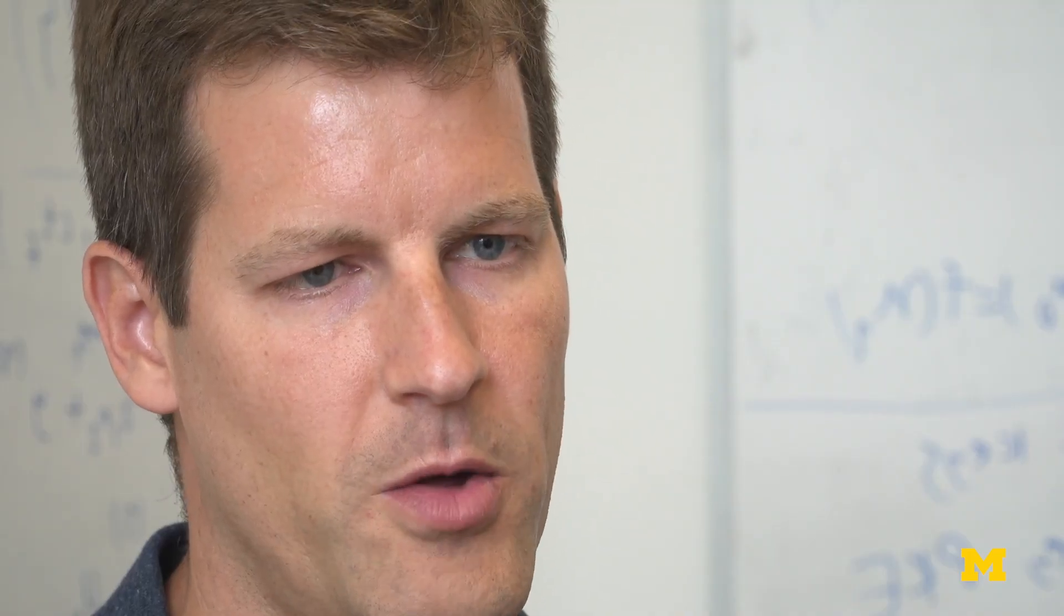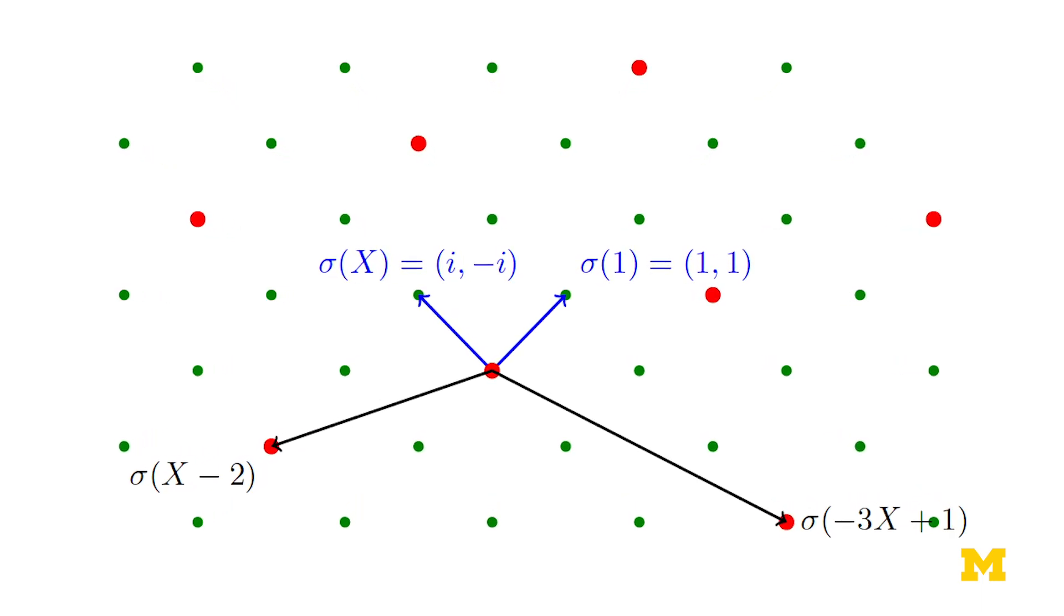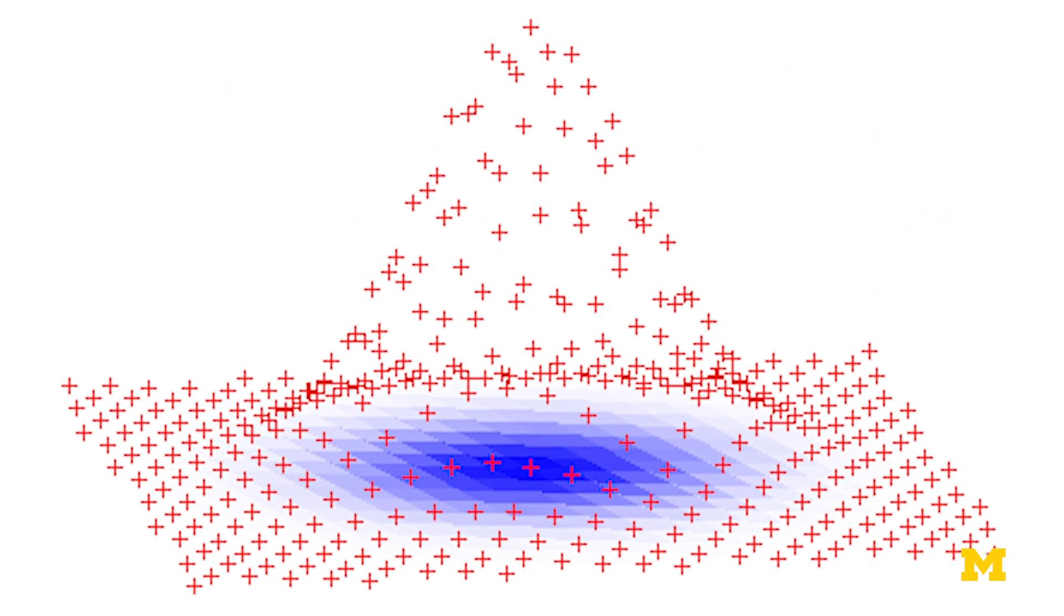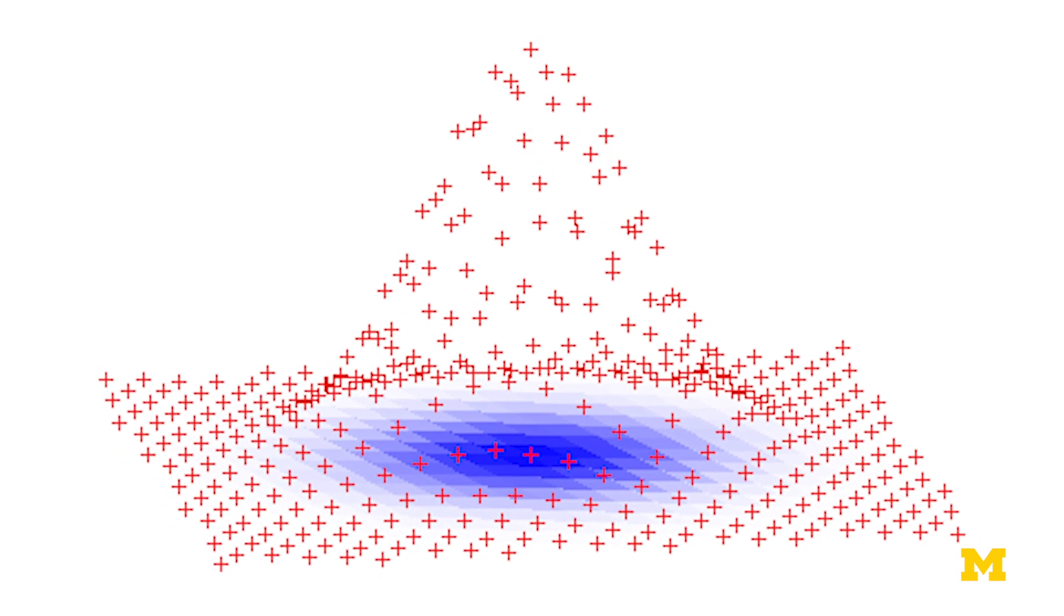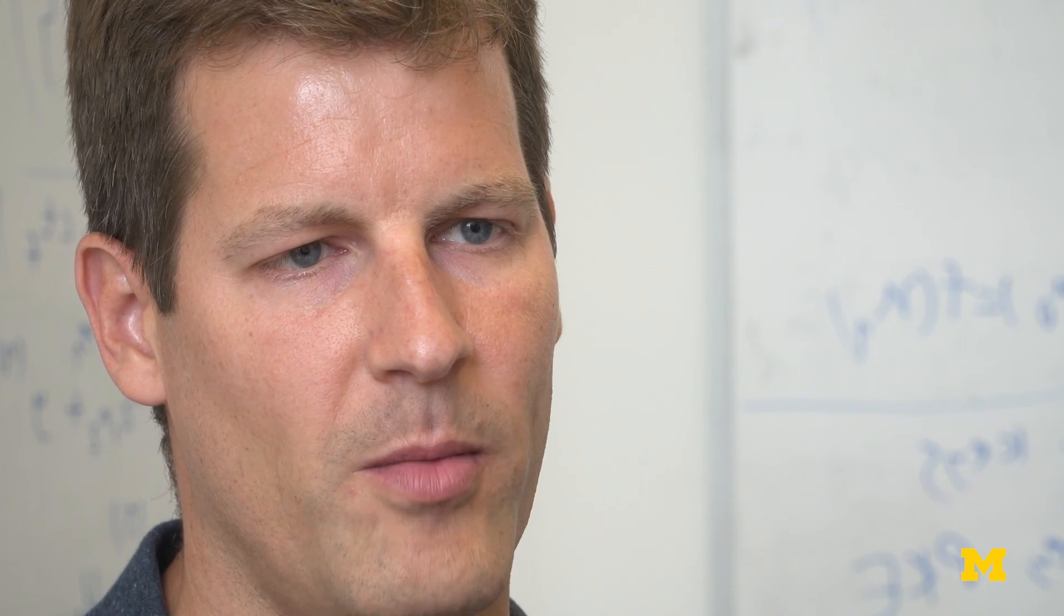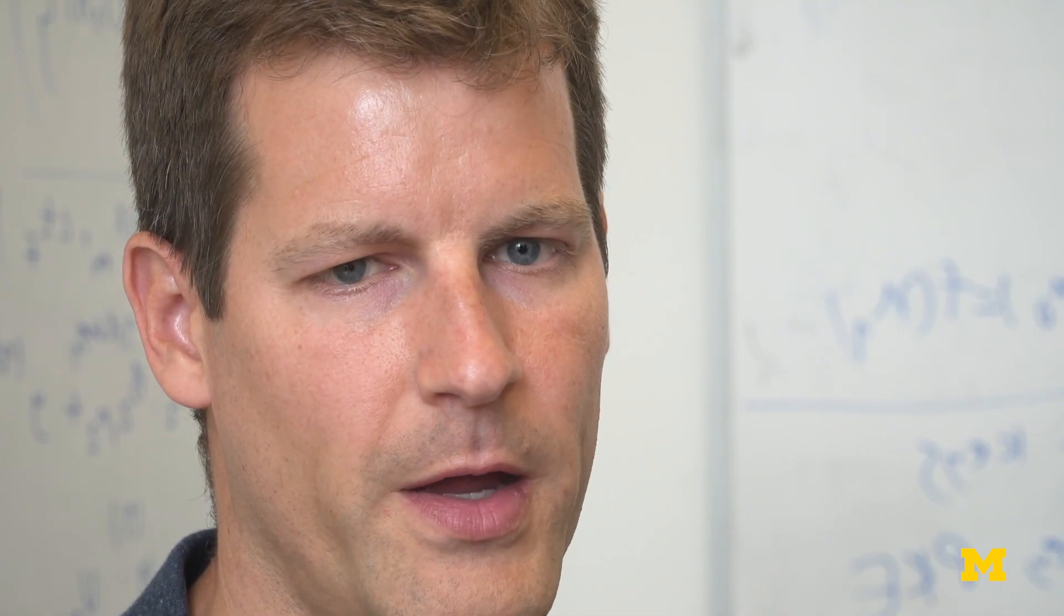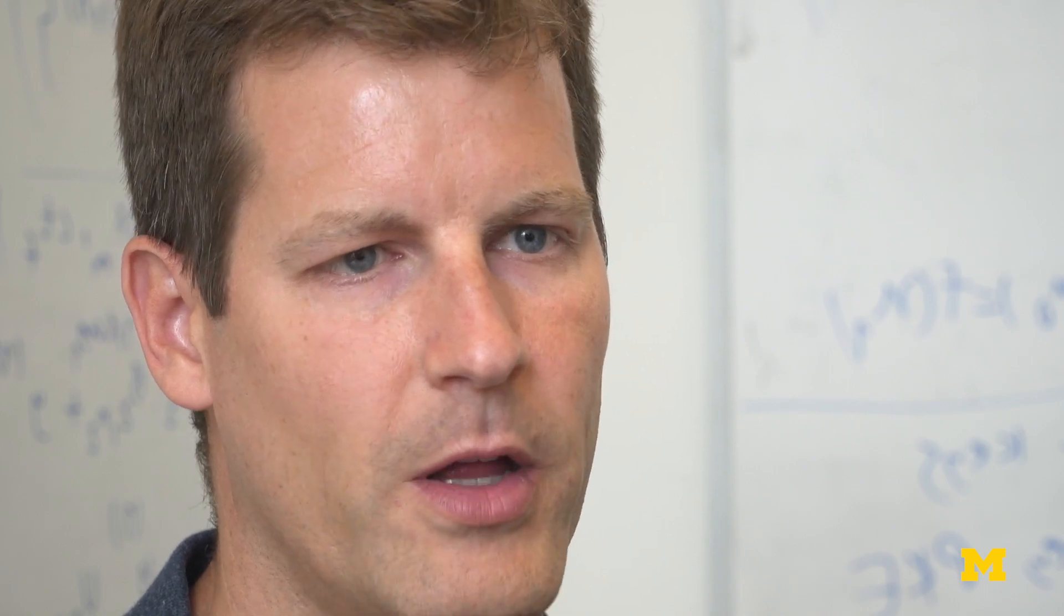A lattice is this geometric grid of points that goes up to infinity in all directions and we use them in very high dimensions, hundreds or even a thousand or more dimensions. And the core difficult problem that we rely on is I present to you a lattice and your goal is to find two lattice points that are relatively close together.